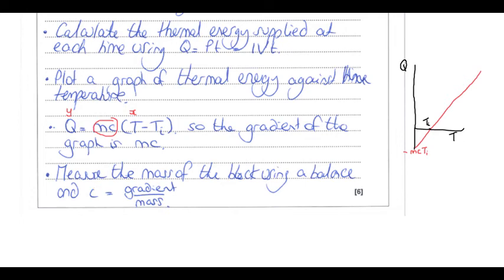Other graph approaches are acceptable — for example, temperature versus time — as long as you explain how to determine specific heat capacity from your graph. Measure the mass of the block using a balance, divide the gradient by the mass to get the specific heat capacity. A good point many students made was to thermally insulate the block, which would be worth credit.